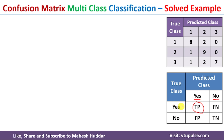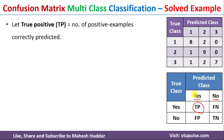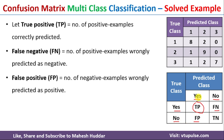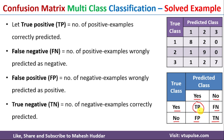TP is the number of 'yes' examples which are classified as 'yes' — that is the true positive. FN is the number of 'yes' examples which were classified as 'no' — that is the false negative. FP is the number of 'no' examples which are classified as 'yes' — wrongly predicted. TN is the number of 'no' examples classified as 'no' — the true negative. TP and TN are correctly classified; FP and FN are incorrectly classified.